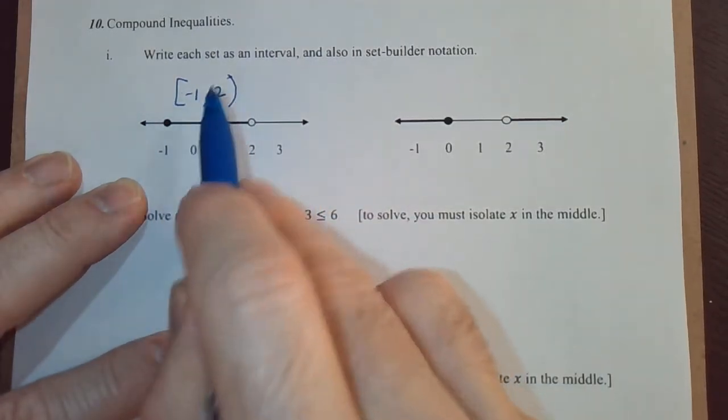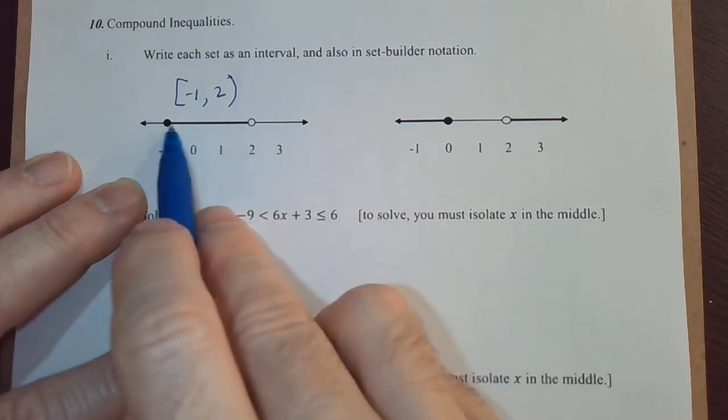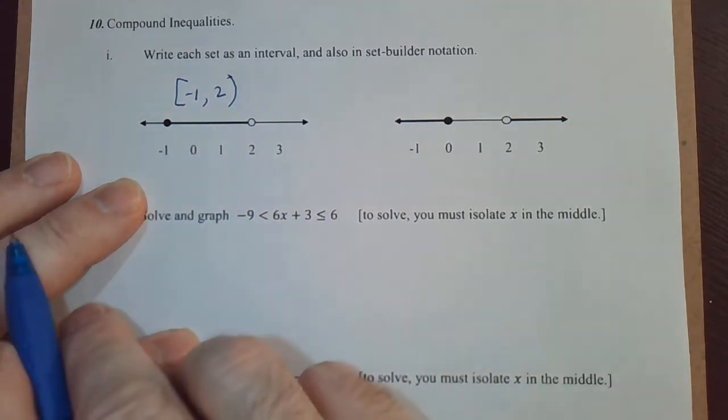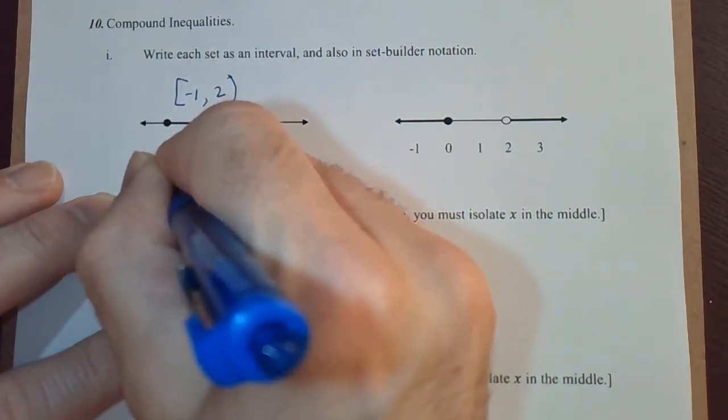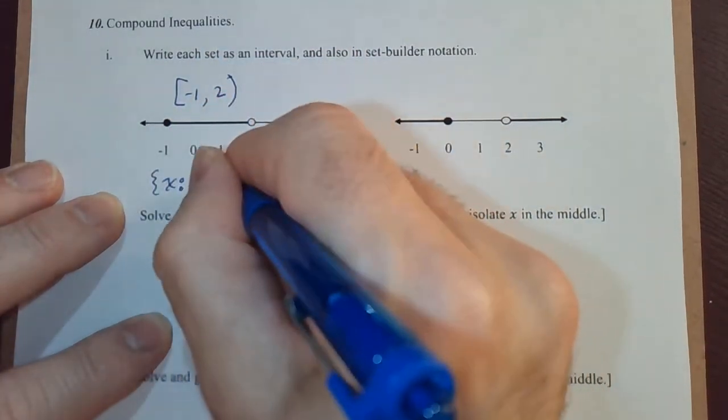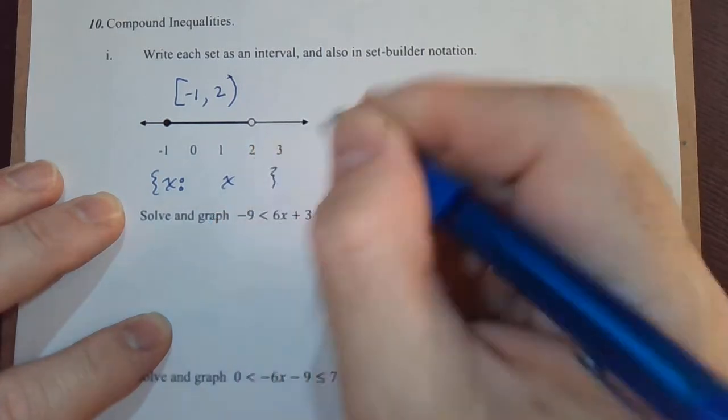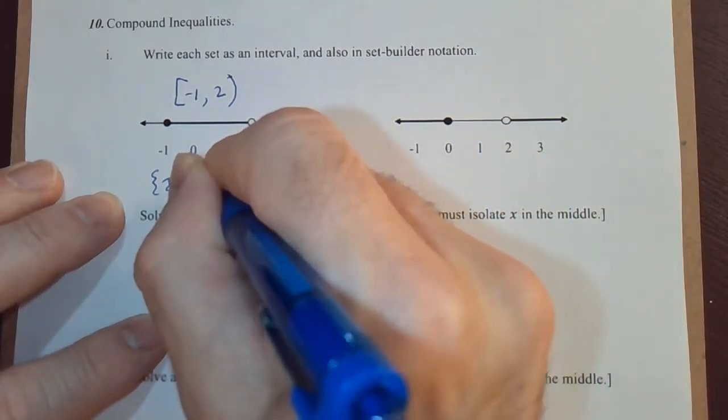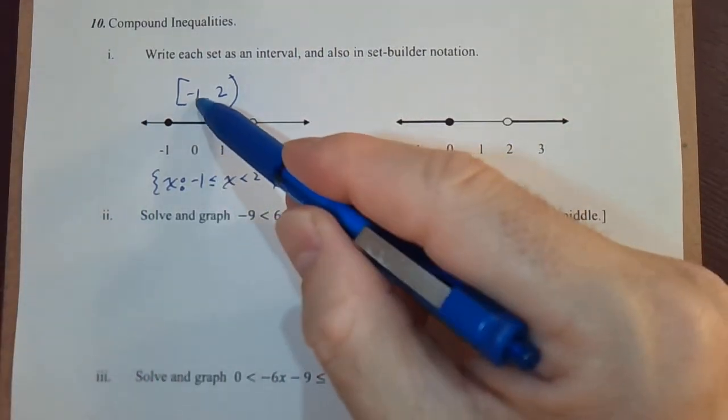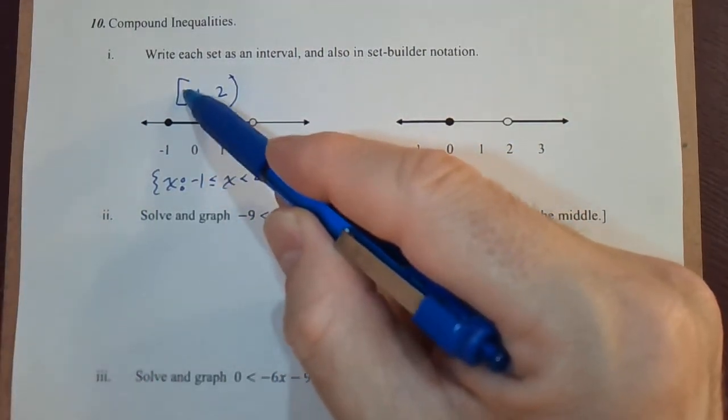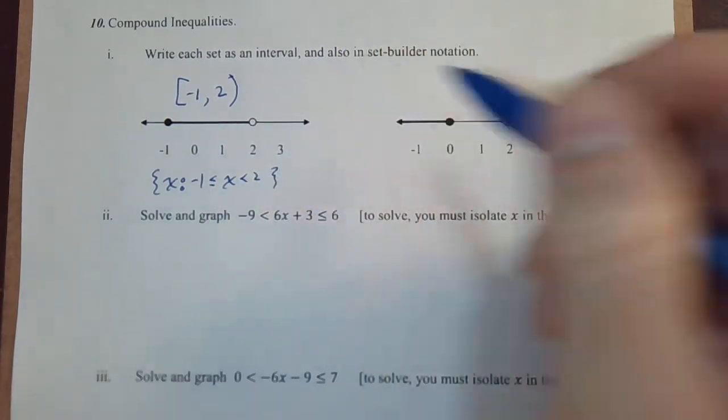This symbol is the same set as the set that's shaded on this line. And in set builder notation, we would say the set of all x such that x is in between 2 and negative 1. You put the less than or equal on the negative 1 side because it can equal negative 1, but it cannot equal 2.